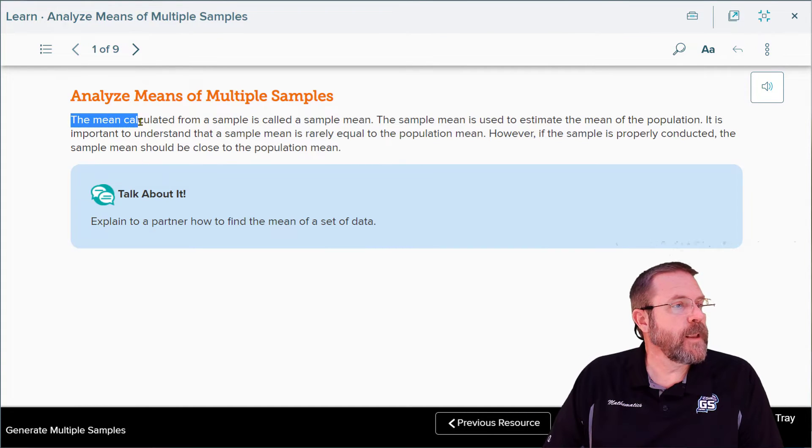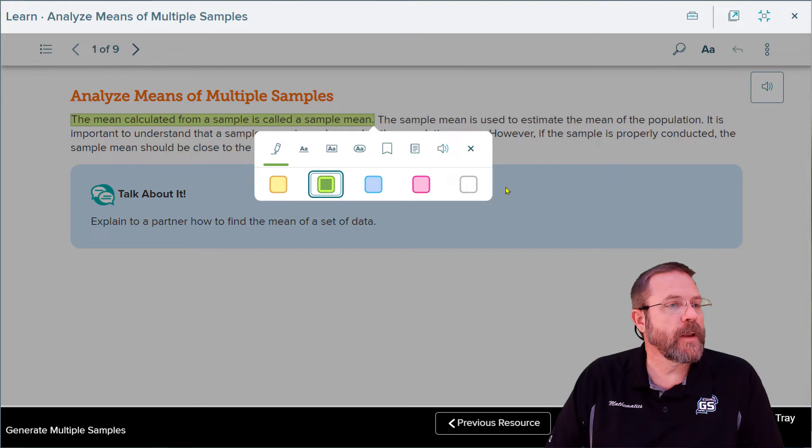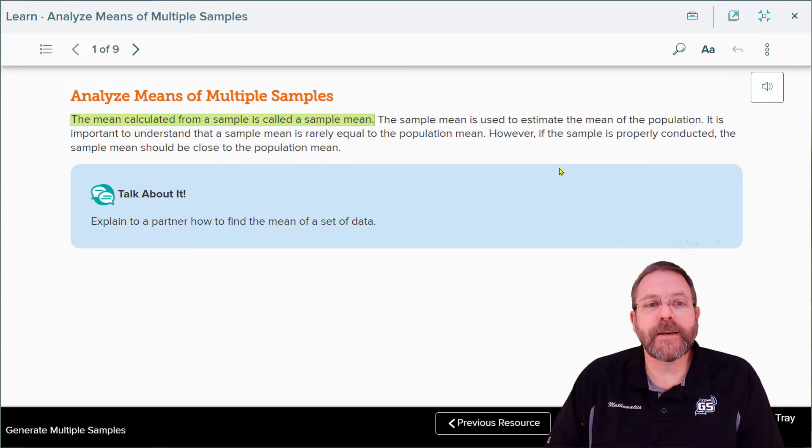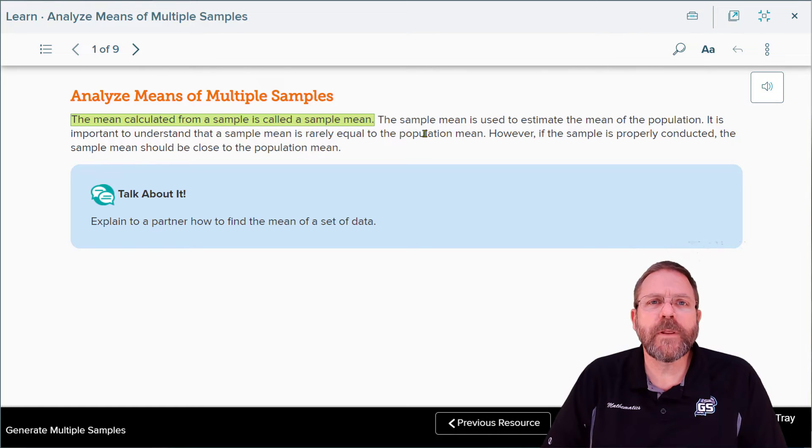The mean calculated from a sample is called a sample mean. The sample mean is used to estimate the mean of a population. It is important to understand that the sample mean is rarely equal to the population mean. So you're not likely to get the exact average of what you would have in the population. However, it's probably going to be pretty close if you conduct the sample properly.